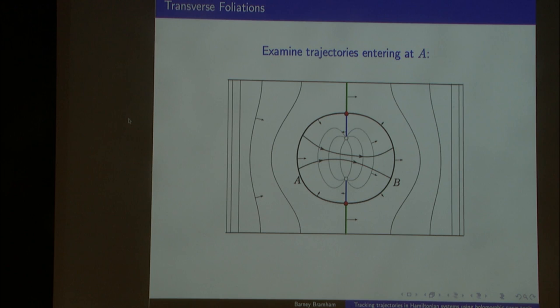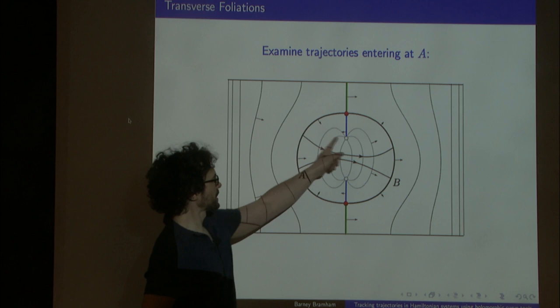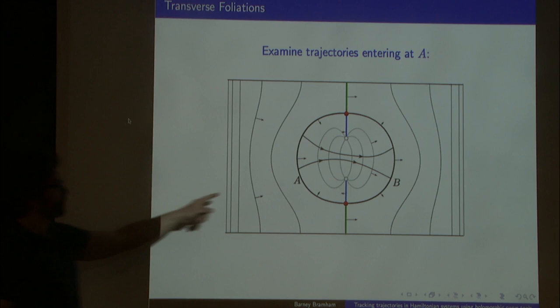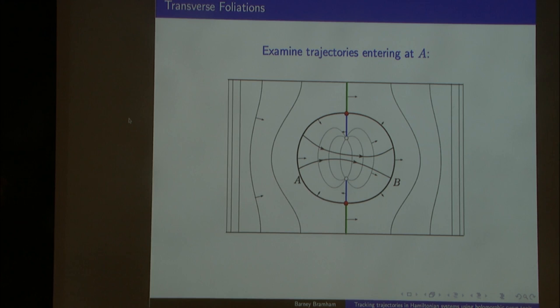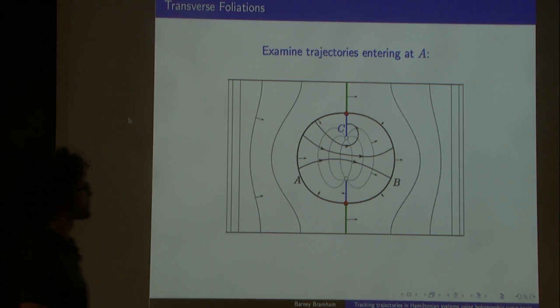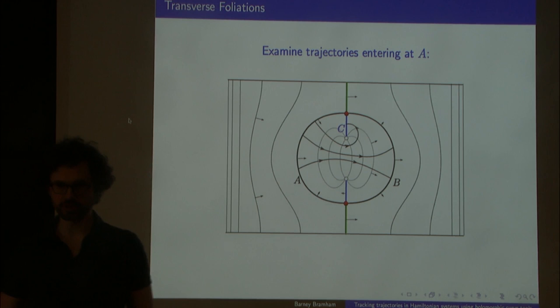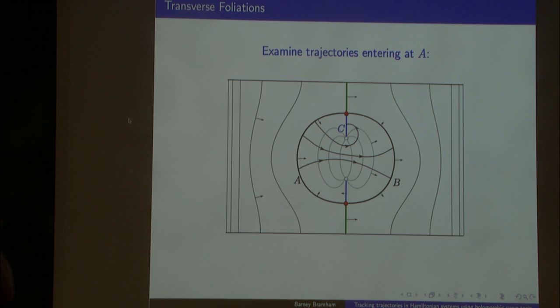Let's look at what happens to the flow as it enters the region capped off by two disks. A trajectory from A goes along and comes out at B. The fact that we have all these leaves in the middle, with the vector field transverse, forces a trajectory starting here to keep going — it can't wind around and get stuck, it has to go somewhere. The non-degeneracy of the periodic orbits will stop things getting slowed down near the white periodic orbits. Another possibility is that a trajectory starting from disk A goes to annulus C.